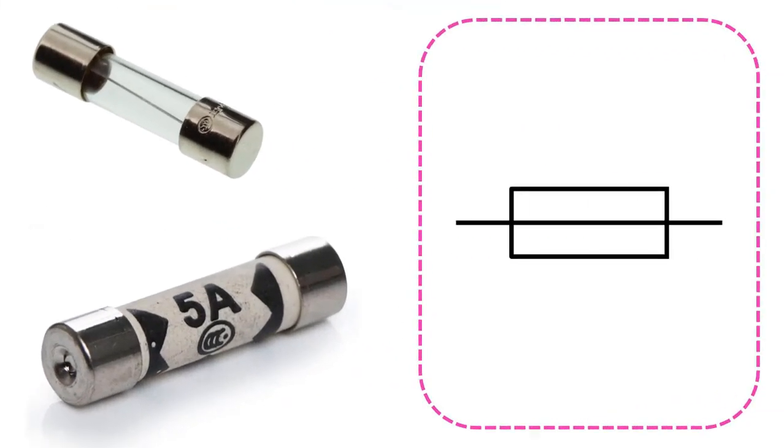This symbol is generally used for fuses that protect circuits against high current. The current values that can provide maximum protection are written on them. If the current flowing through it exceeds a certain value, it explodes or melts, providing safety.